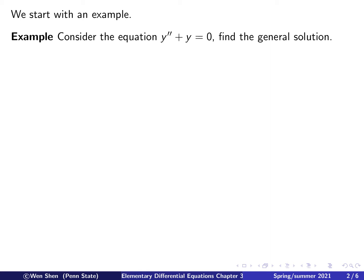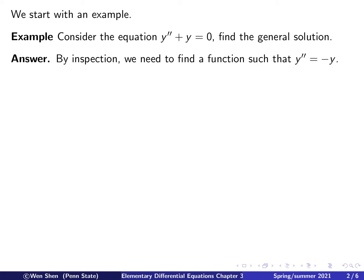So we will start with an example. We consider the equation y double prime plus y equals 0, and we want to find the general solution. Let's do this by inspection. If we rewrite this equation, moving the term y to the right hand side, we have y double prime equals negative y.